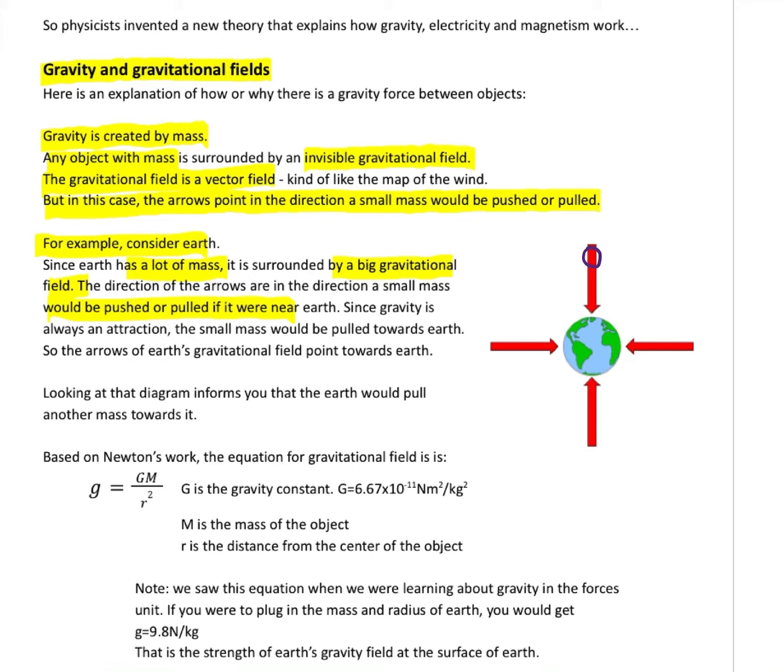Which way would that mass get pushed or pulled? Gravity's kind of boring, gravity's always attraction. So a mass right there we get pulled down towards Earth. A mass over here, imaginary mass, same thing - we get attracted in, pulled towards Earth. Down here pulled towards Earth, over here an imaginary mass pulled towards Earth. Wherever we imagine a mass it's going to get pulled towards Earth. That means that the gravitational field of Earth is a bunch of arrows pointing towards Earth.